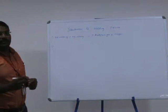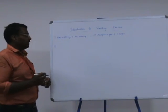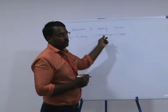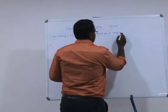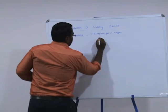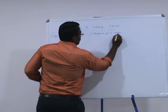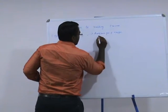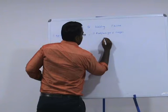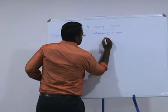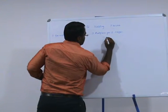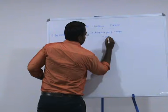Depending upon the heat energy we require, we will be changing the proportion of acetylene as well as oxygen. Suppose if you are giving more oxygen than acetylene, the flame will be called an oxidizing flame.